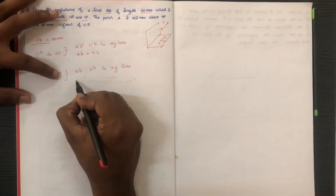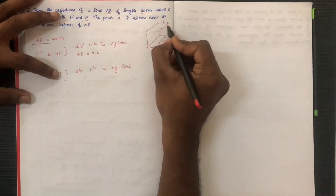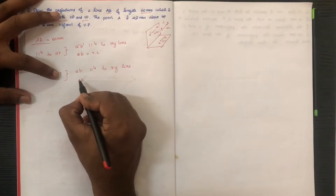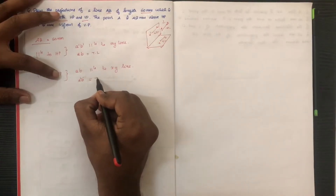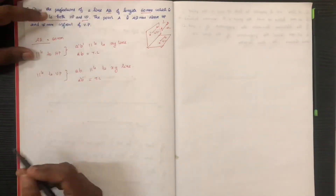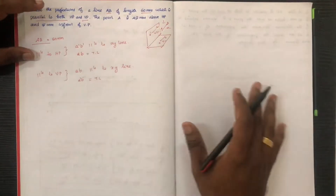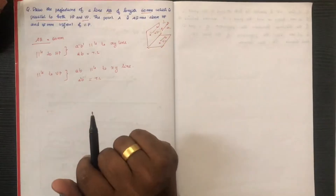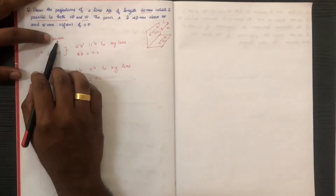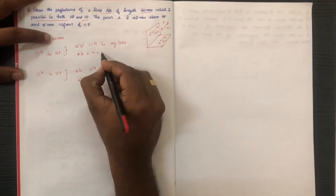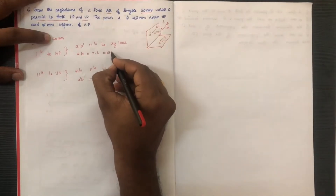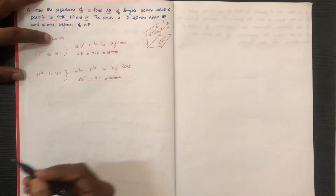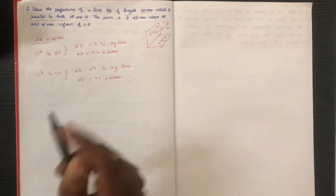If the line is parallel to VP, then the elevation is parallel to VP. If the line is parallel to HP, the true length is the same as the projected length. This is the conclusion when the line is parallel to both HP and VP.